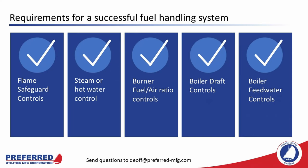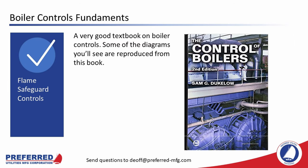Boiler controls can be broken down into several major categories: flame safeguard controls, steam pressure or hot water temperature controls, fuel-air ratio controls, boiler draft controls, and feedwater controls. After covering the basics, we'll discuss the four most common ways to blow up a boiler and how boiler controls are designed to prevent these failures. There is a very good textbook on boiler controls called 'Control of Boilers' by Sam Ducolo — an excellent, fairly current resource. I redrew some of the SAMA diagrams from this book for this presentation.